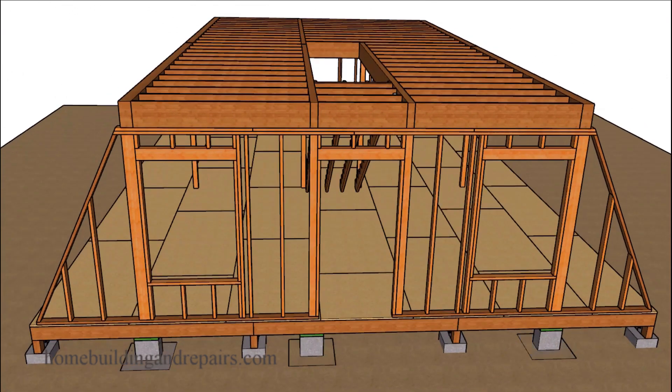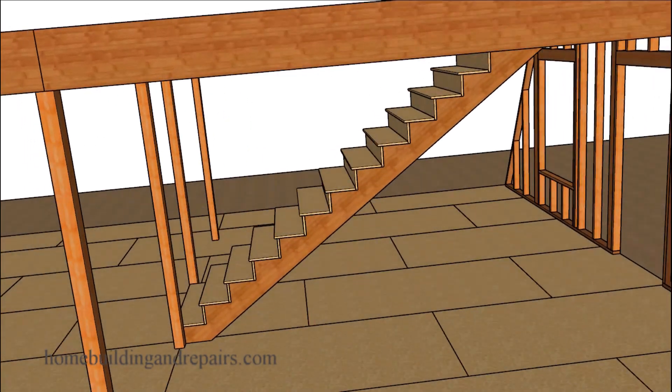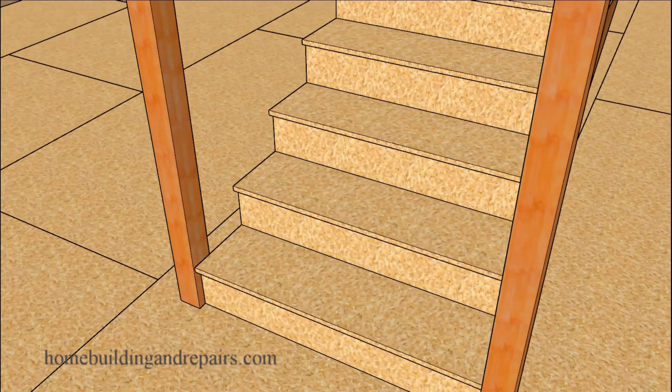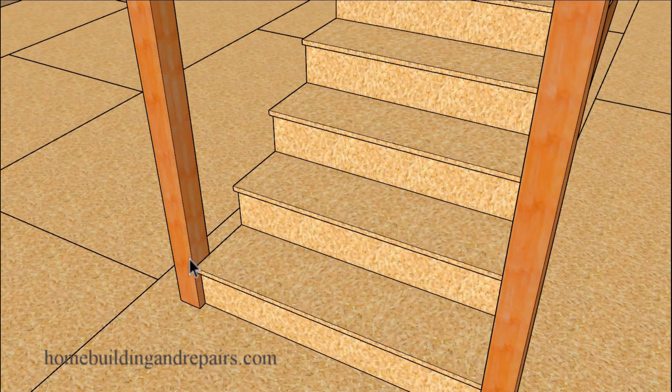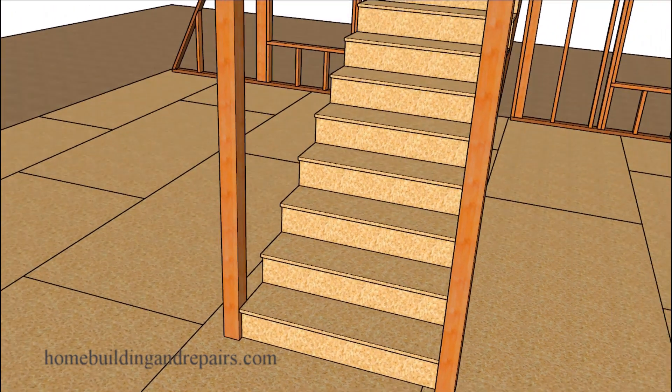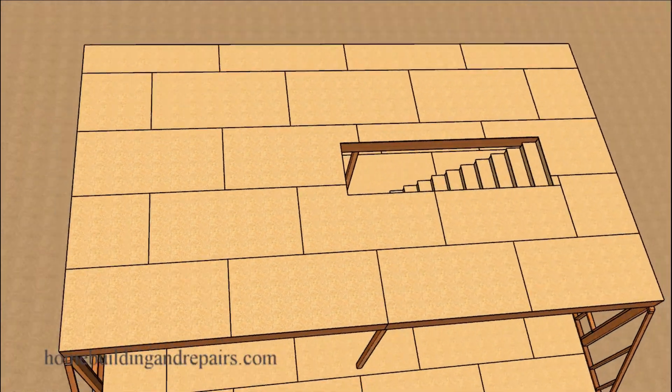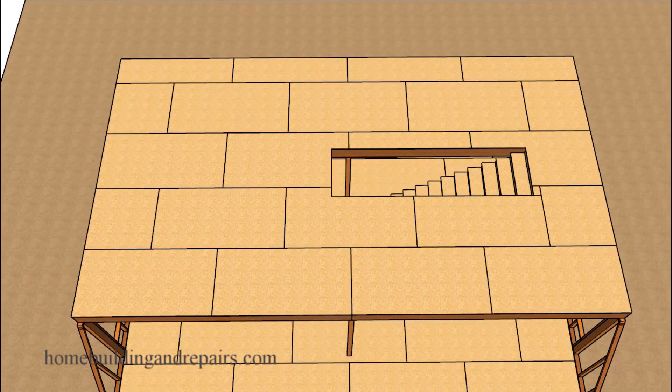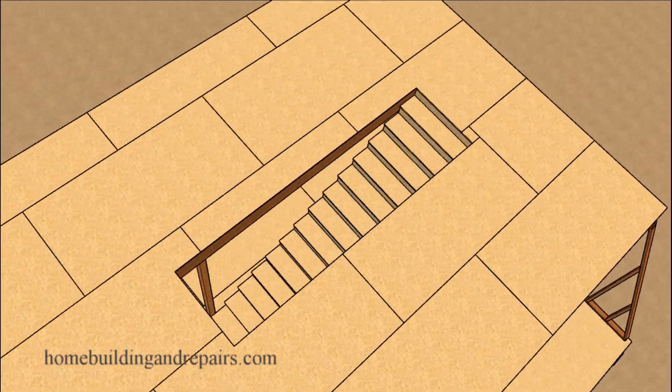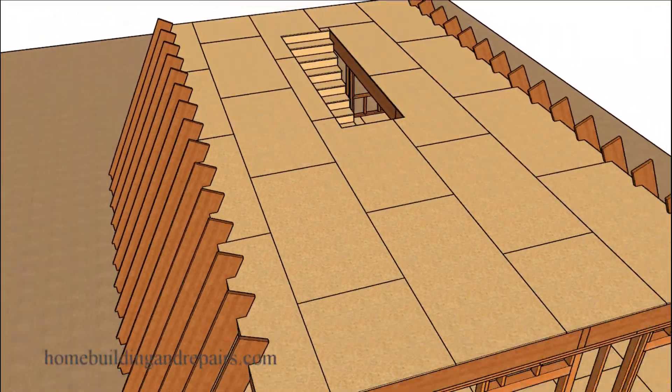Next up let's go ahead and install the stair stringers. I went ahead and lined the bottom of the stairway up with the posts here, or you could say that I moved the posts to line them up with the bottom of the stairway. In this building the stairway is going to occupy a lot of space. You might consider moving it to the outside of the building if you need a little more floor space.